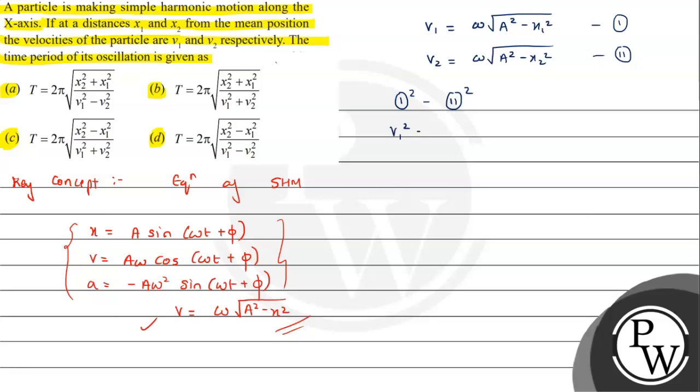v1² - v2² equals ω²(A² - x1²) minus ω²(A² - x2²), which simplifies to ω²A² - ω²x1² - ω²A² + ω²x2². The ω²A² terms cancel out, leaving ω²(x2² - x1²).